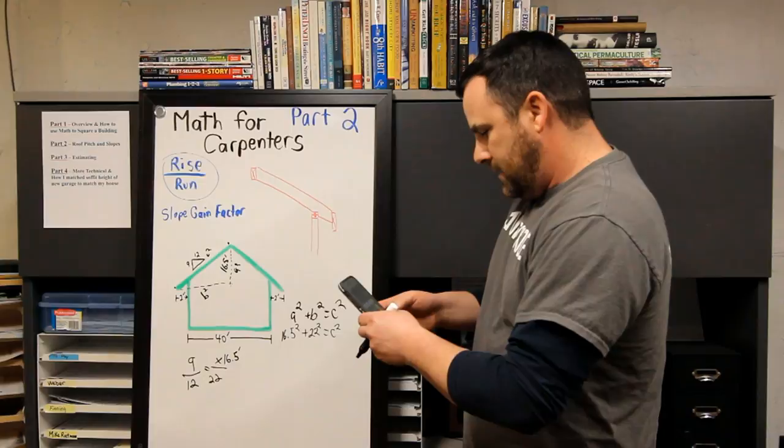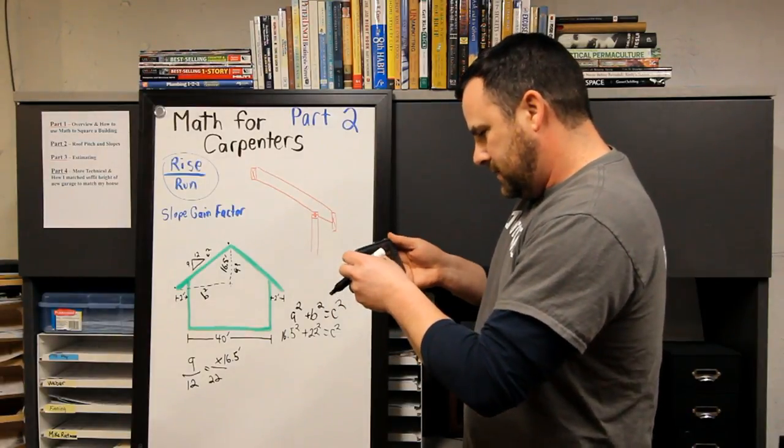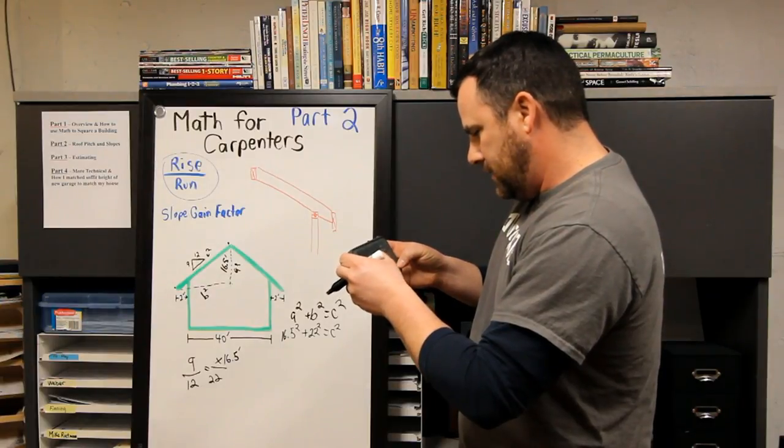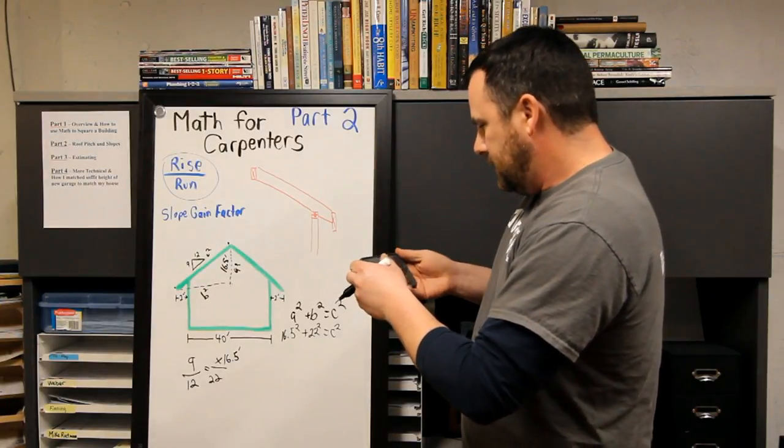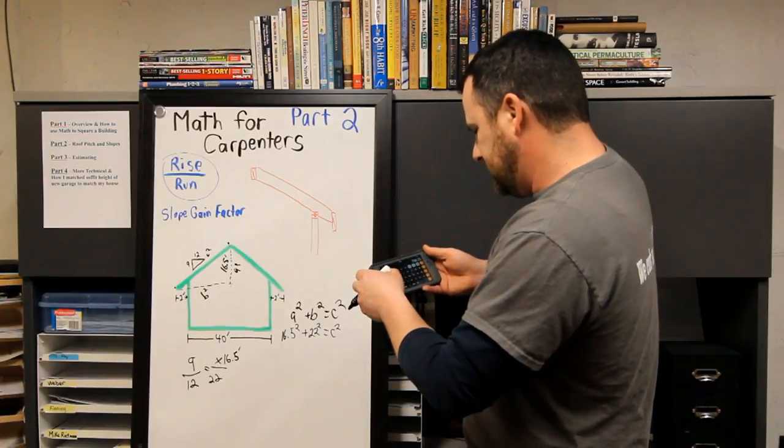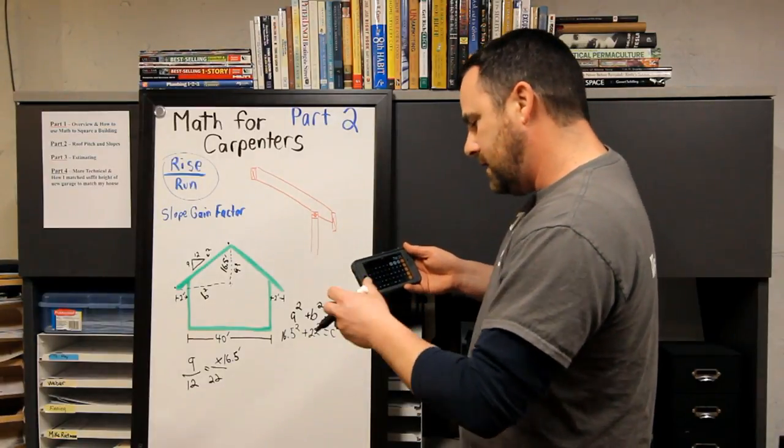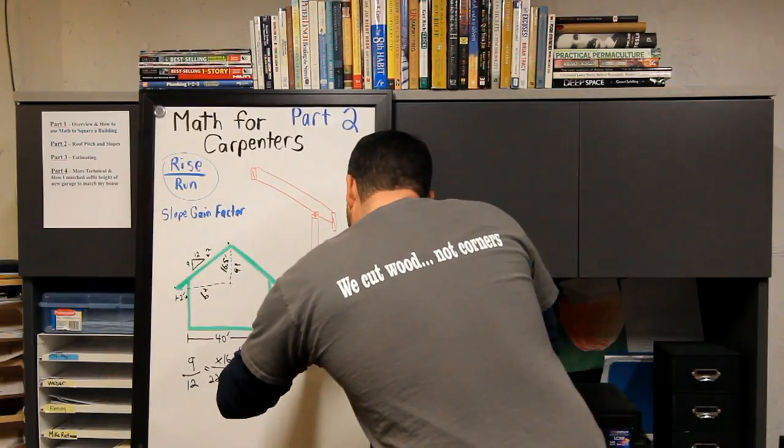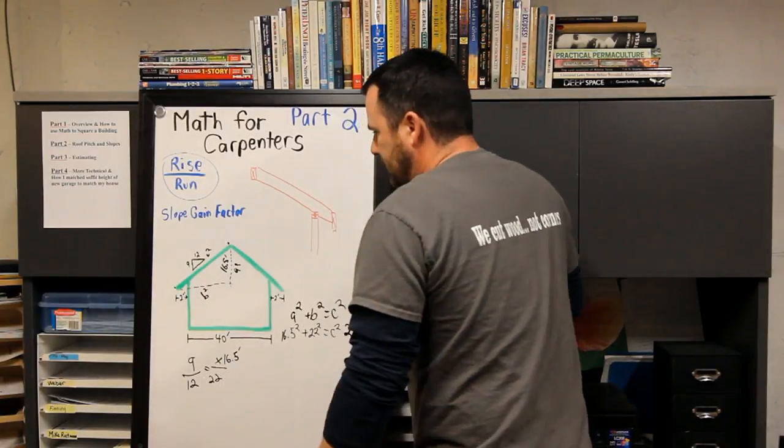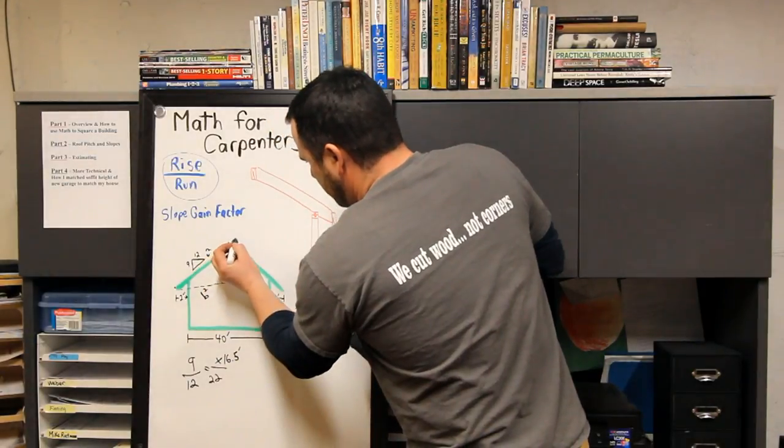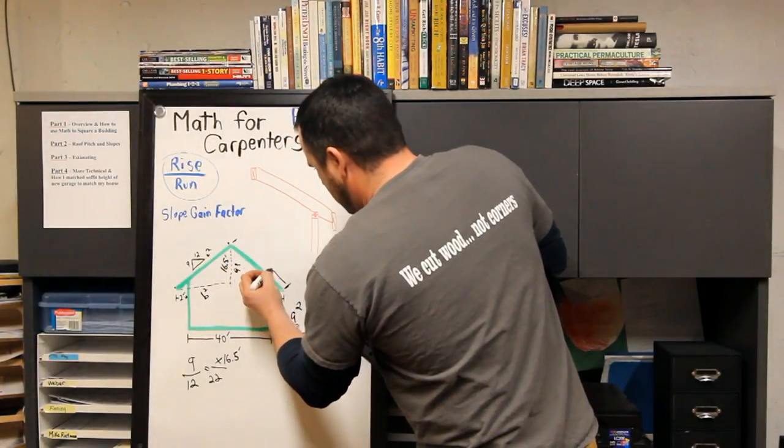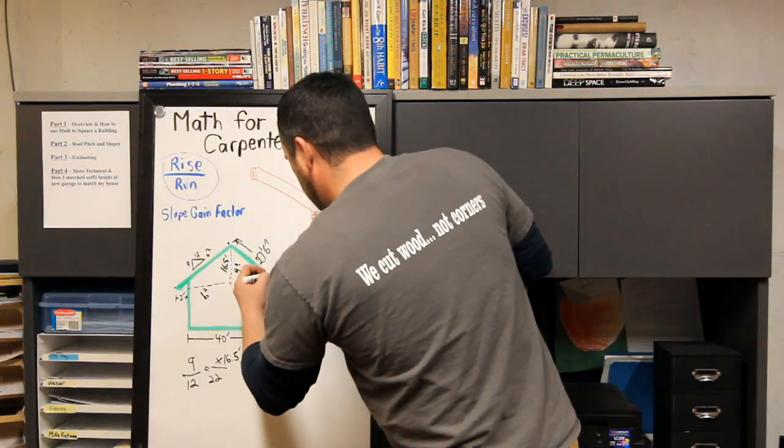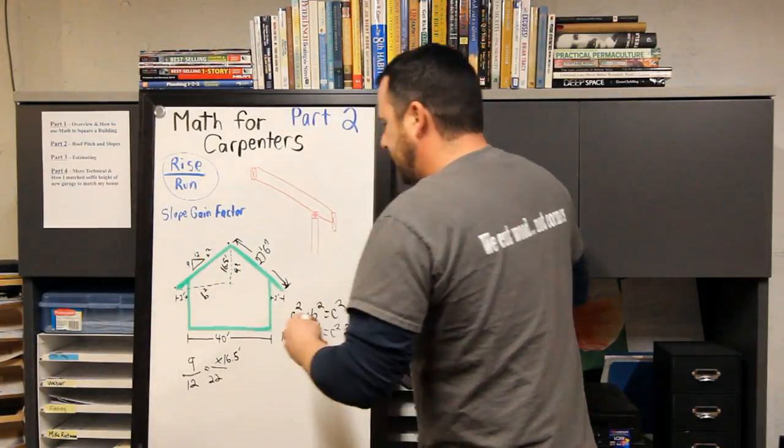So 16.5 squared plus 22 squared equals 756.25, which is a squared number. So I have to take the square root, which is 27.5 feet.